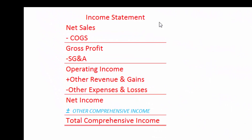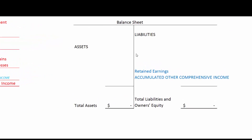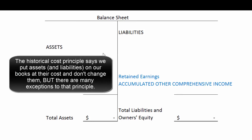By way of context, here's a schematic of a typical income statement: our sales minus our expenses to give us our net income. And here's a schematic of a balance sheet — on the left-hand side are our assets. Originally, the historical cost principle provides that when we put something on our balance sheet, like a piece of land, we put it on at historical cost and never change it.